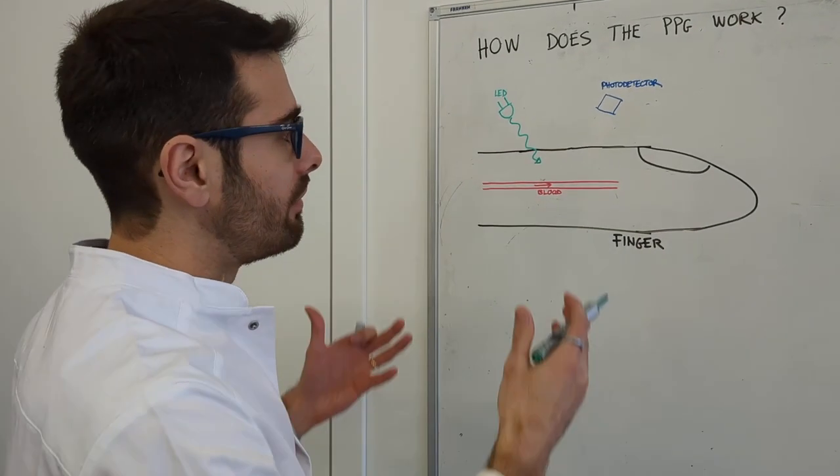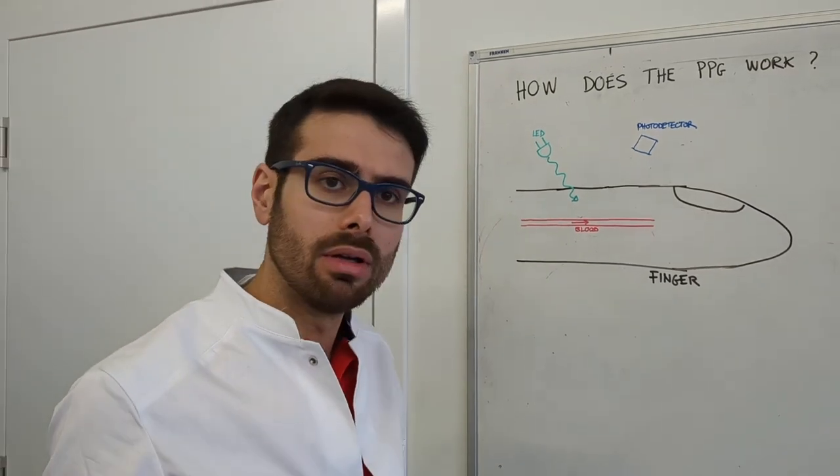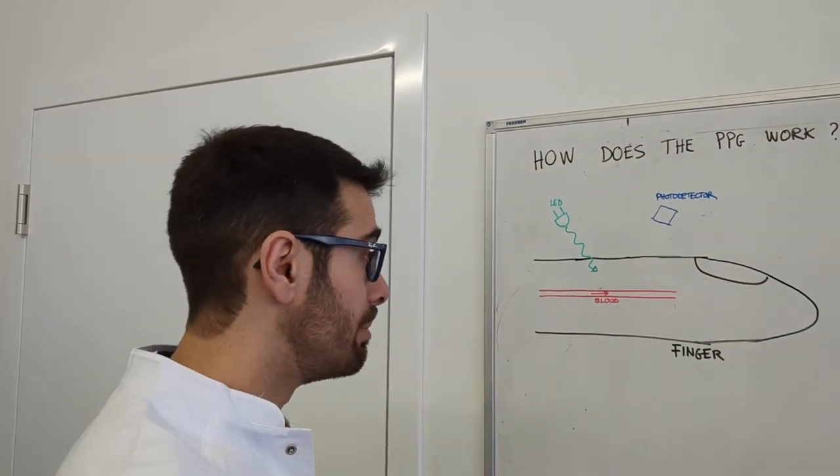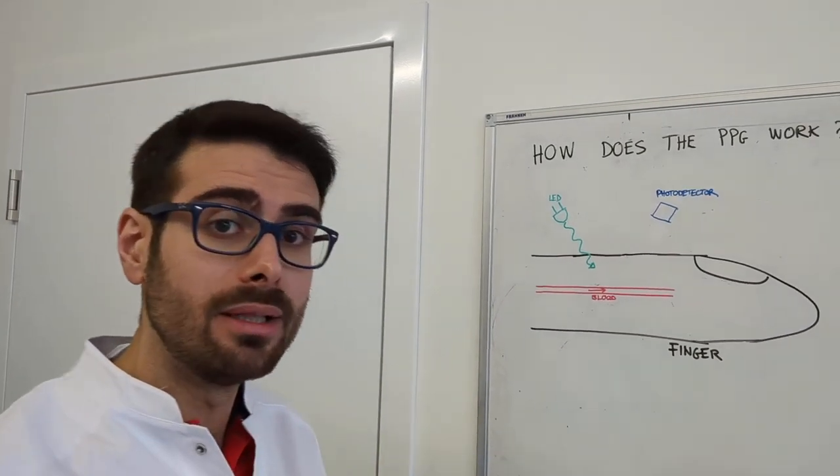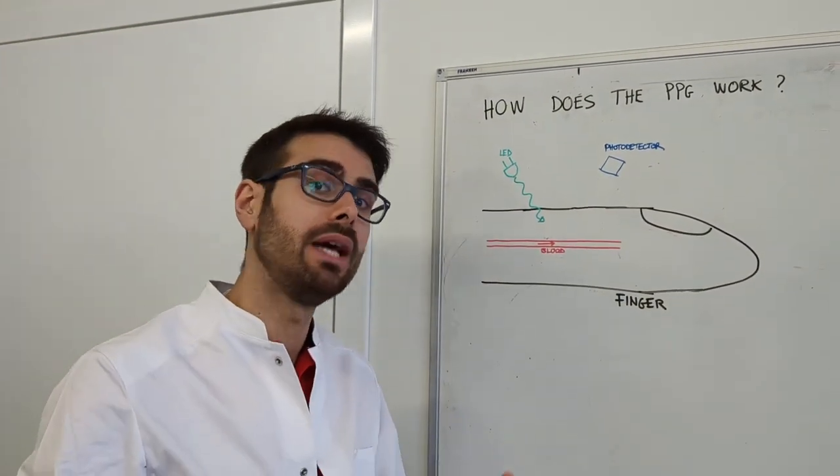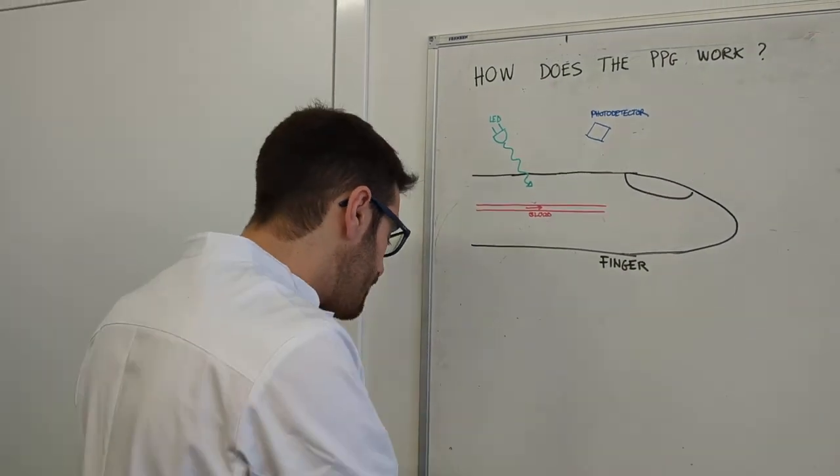The skin, the finger consists of a lot of things, including fat, muscles, but particularly the arteries that are actually carrying the blood, which is pushed by the heart throughout the whole body.